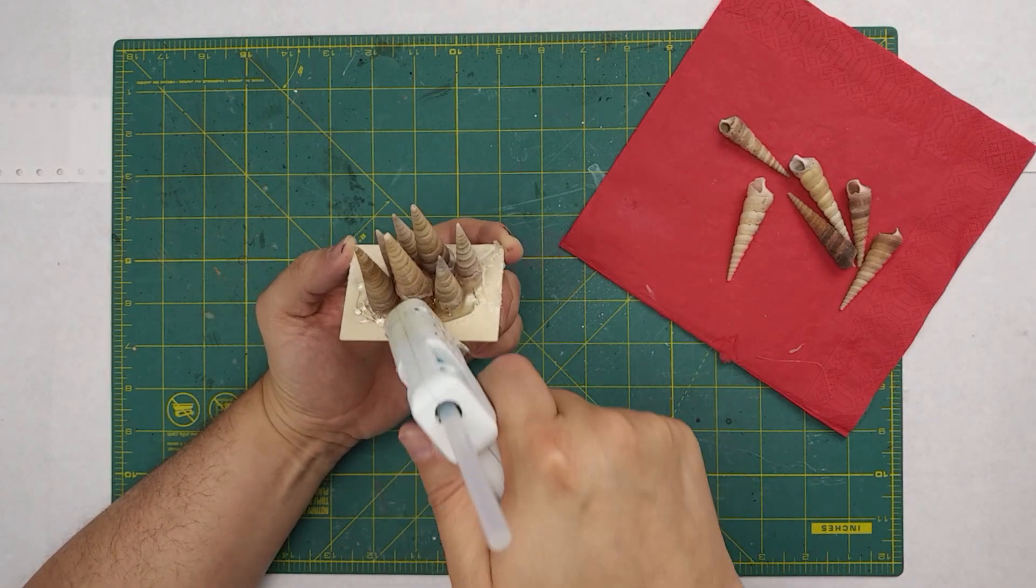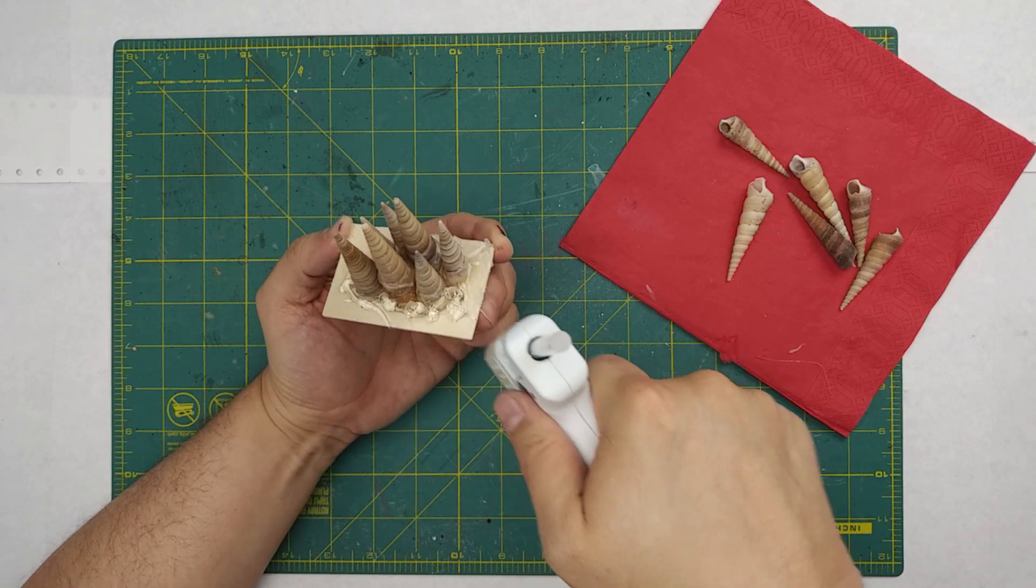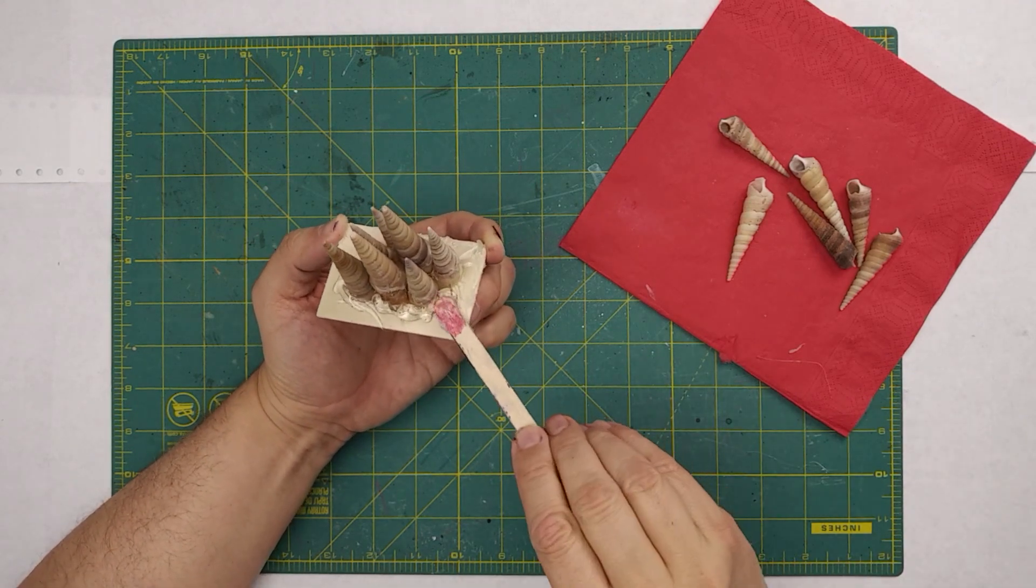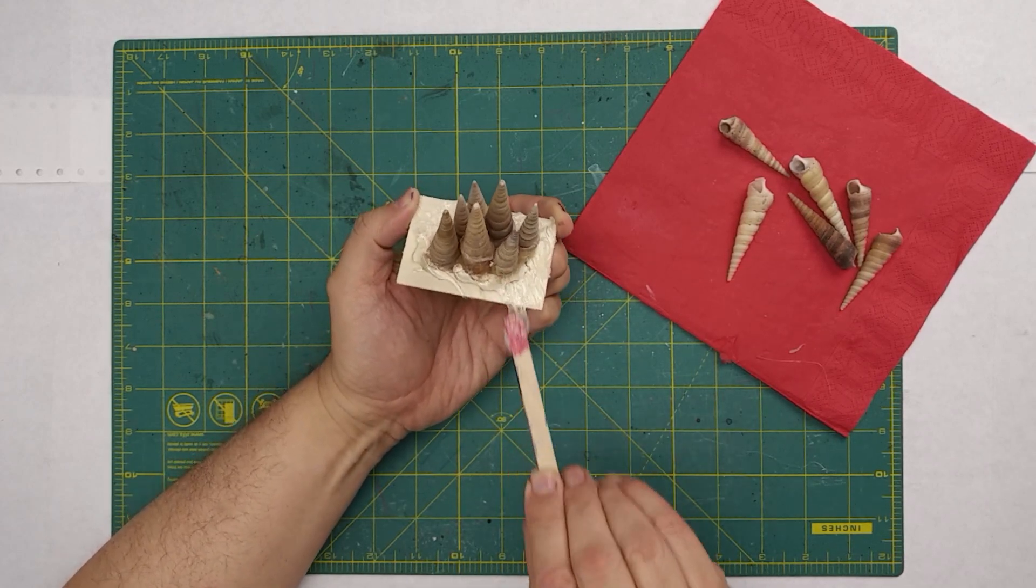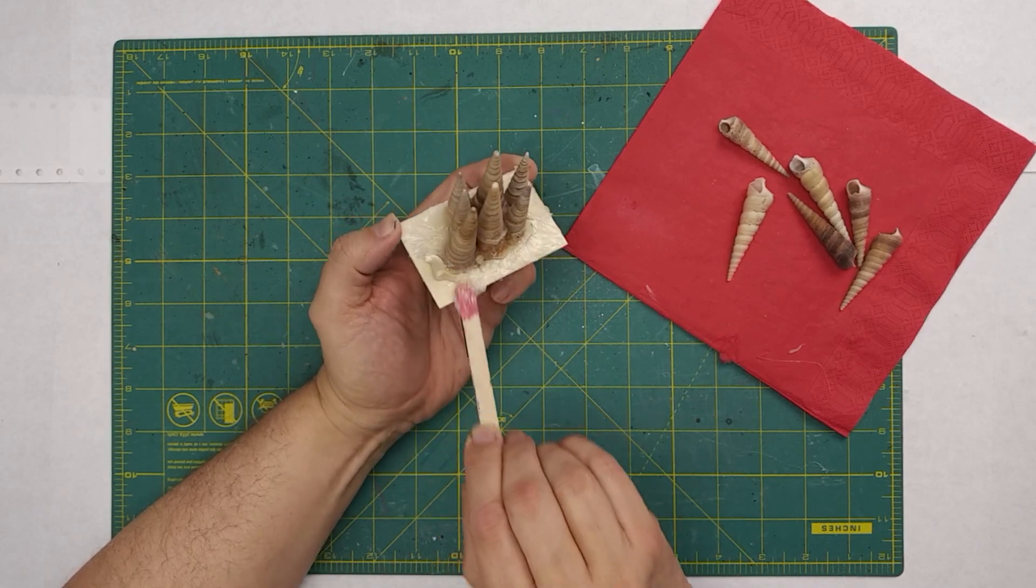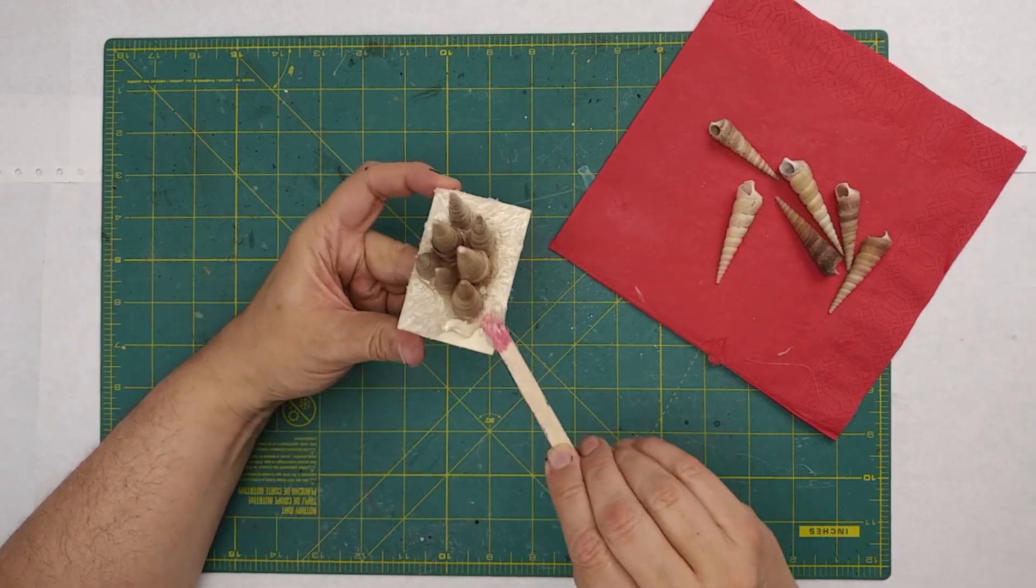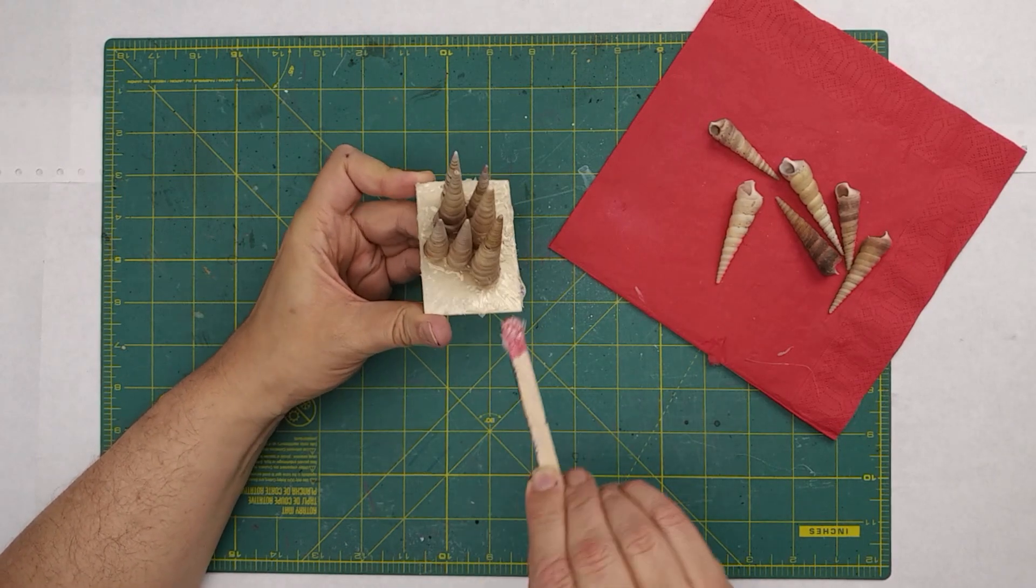We'll keep reinforcing our base and texturizing our surface, using a popsicle stick so that we don't get ourselves burned with the hot glue. A simple dragging technique will produce lots of little crevices.